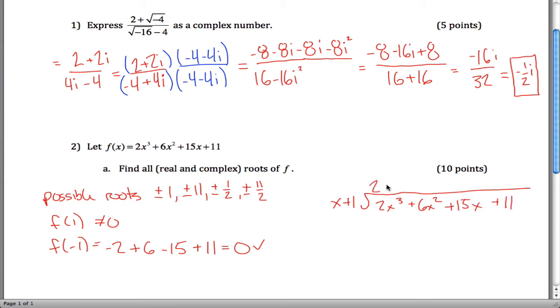To get rid of the 2x cubed, we need 2x squared. That gives us 2x cubed plus 2x squared. And subtract. To get rid of the 4x squared, we need a 4x. That gives us 4x squared and 4x.